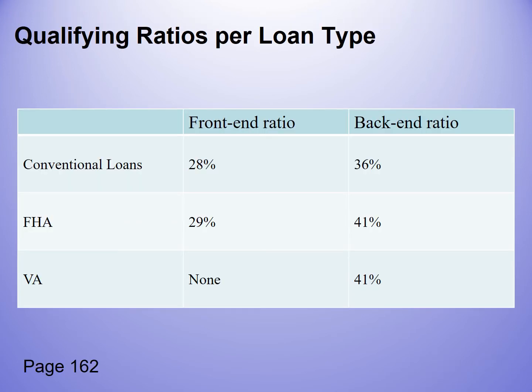Here are front end and back end ratios for conventional loans, FHA, and VA loans. A conventional loan, incidentally, is any loan that's not an FHA or VA loan. FHA loans are insured by the federal government; VA loans are guaranteed by the Veterans Administration; and all other loans are called conventional loans. These are typical front end to back end ratios that will qualify you for a loan if you fall within these categories.